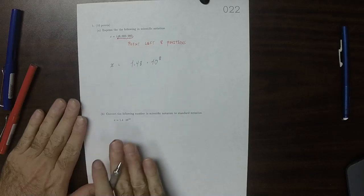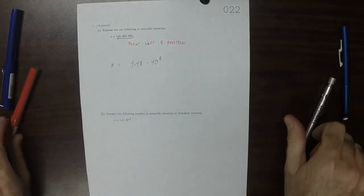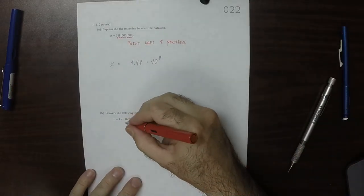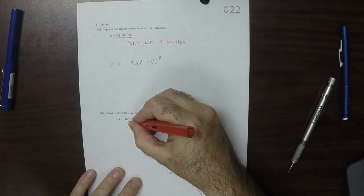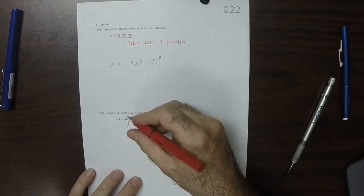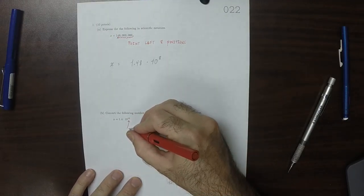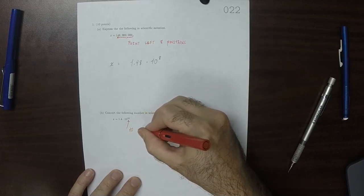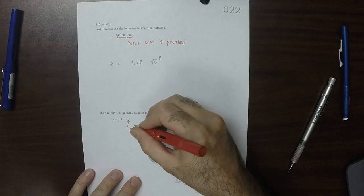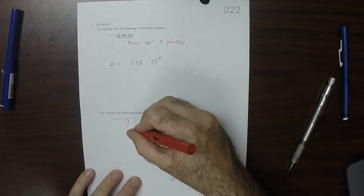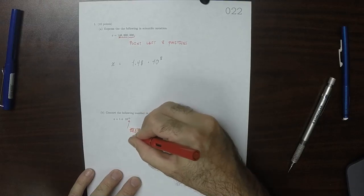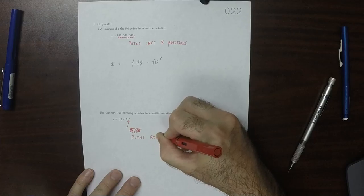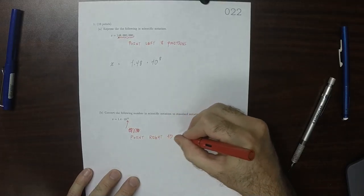Whereas this one is saying we need to have 10 more zeros. Well, no, it's saying we need to move the point to the right 10 positions.